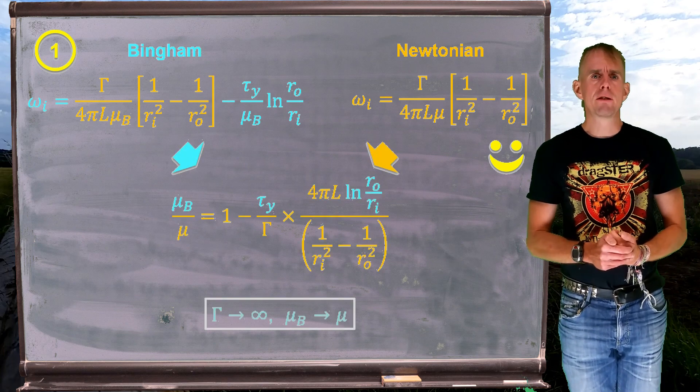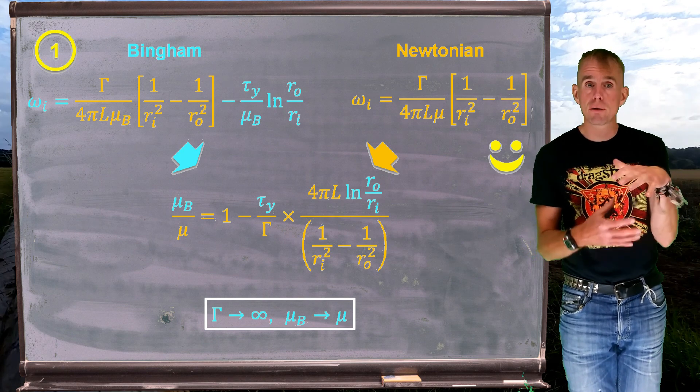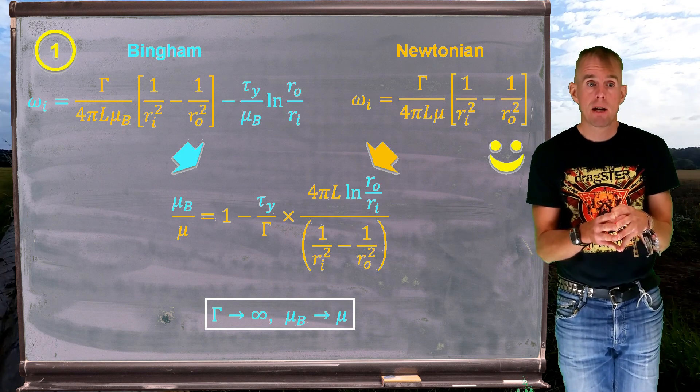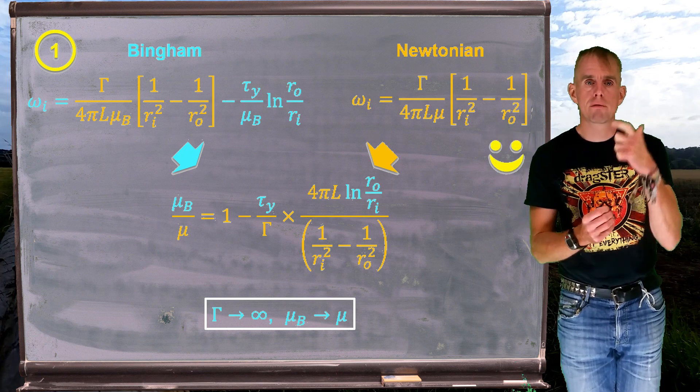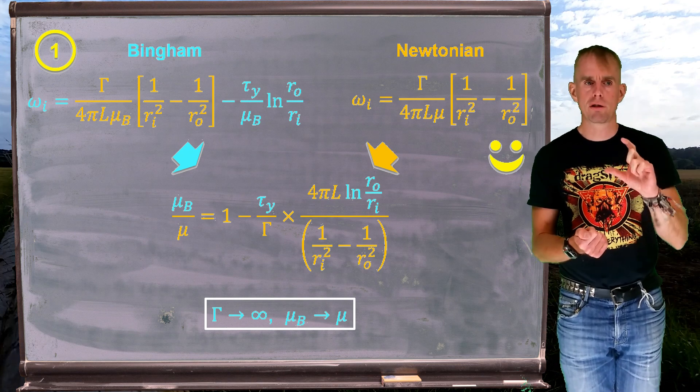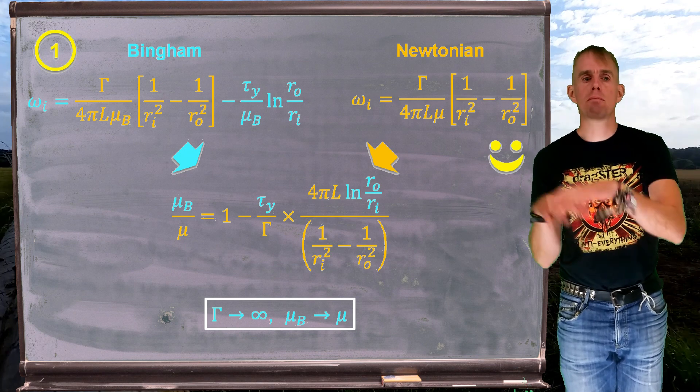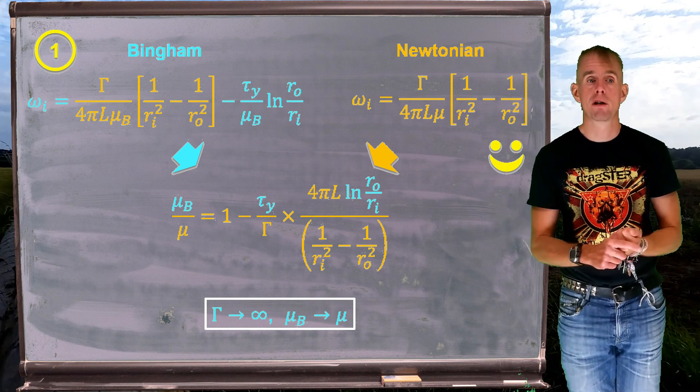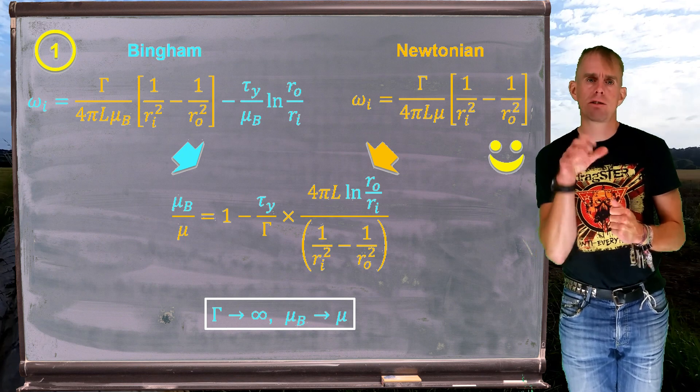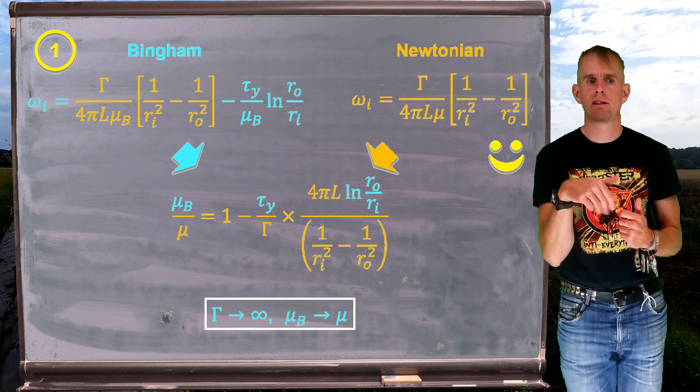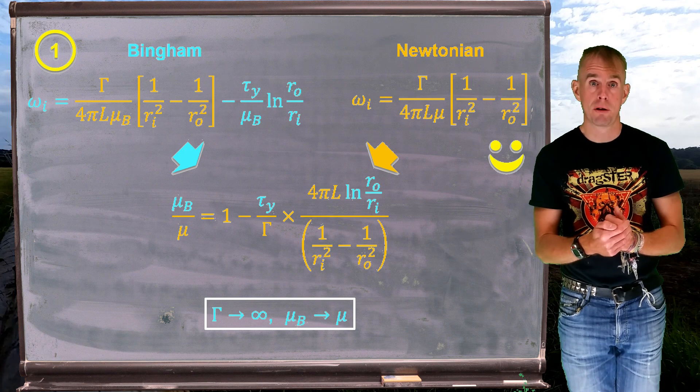So let's have a look, much as we did in pipe flow, at the ratio between the apparent viscosity and the Newtonian viscosity. And if we divide these two terms together, we can see that the ratio of the Bingham viscosity to the Newtonian viscosity, mu b over mu, has a 1, and then minus a group of terms involving 1 over gamma.